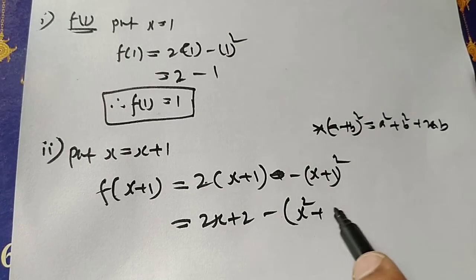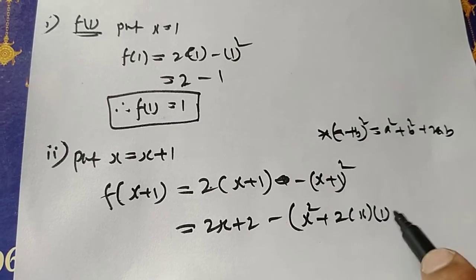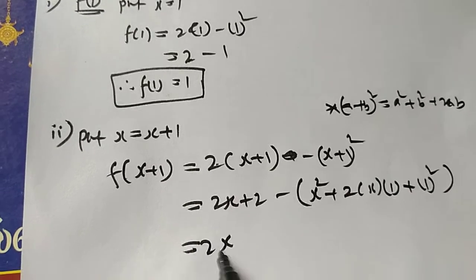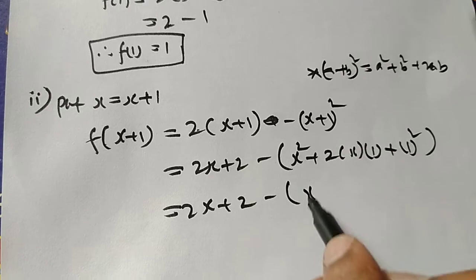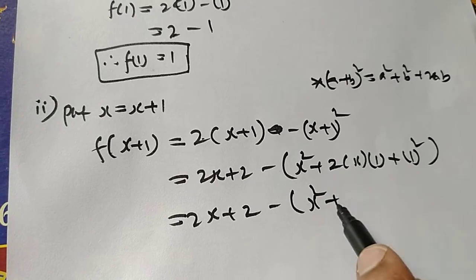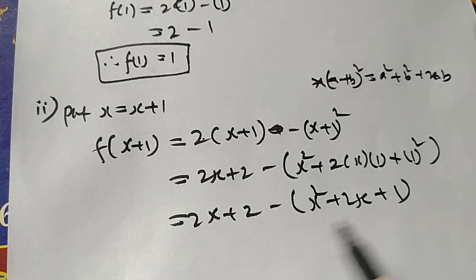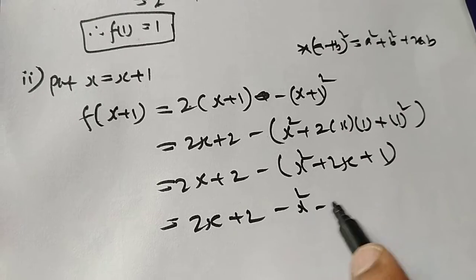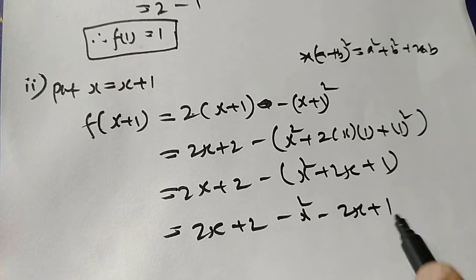So a equal to 2x plus 2 minus a square. 2 into x into 1, 2x, plus 1 square is 1. Equal to 2x plus 2 minus x square minus 2x plus 1.